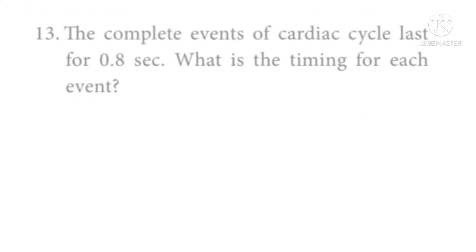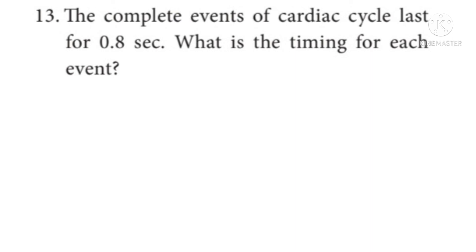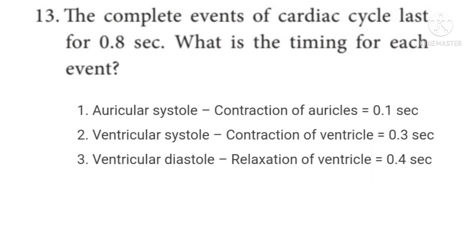Question 13: The complete events of the cardiac cycle last for 0.8 seconds. What is the timing for each event? Auricular systole — contraction of auricles: 0.1 second. Ventricular systole — contraction of ventricles: 0.3 second. Ventricular diastole — relaxation of ventricles: 0.4 second.